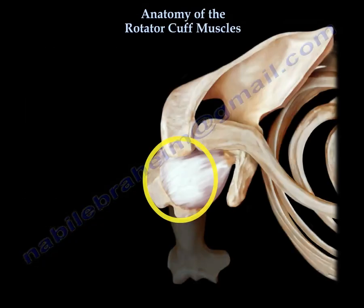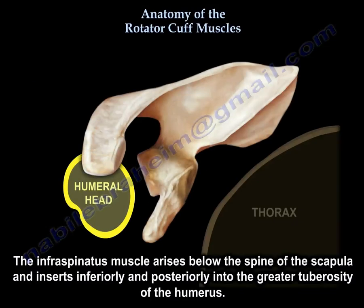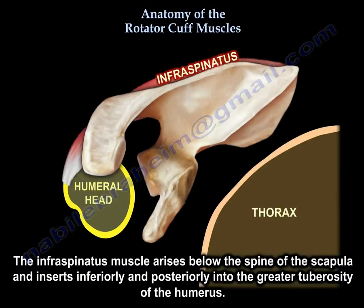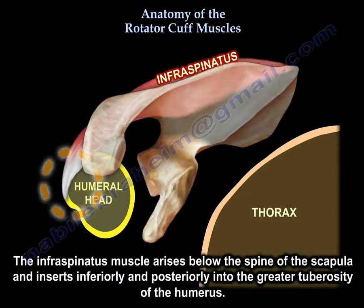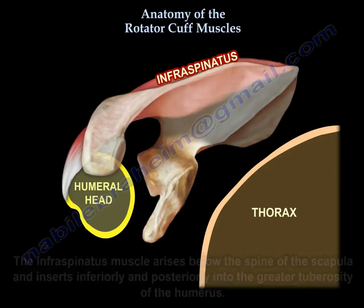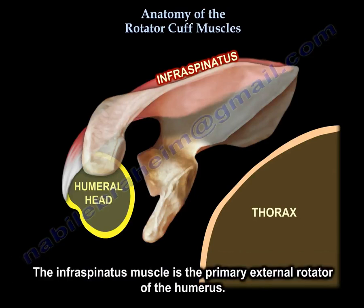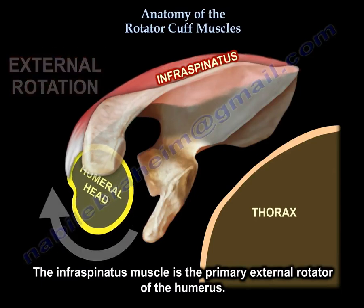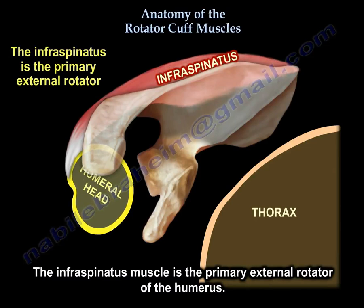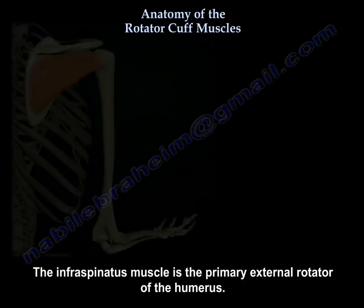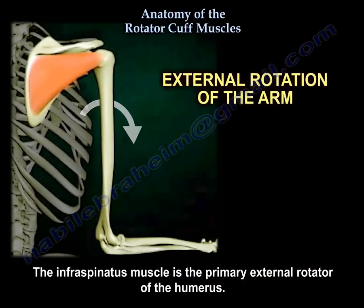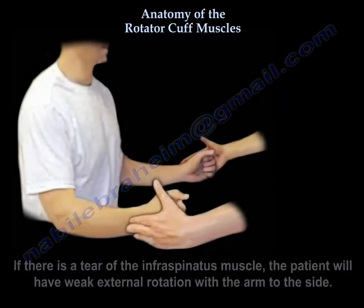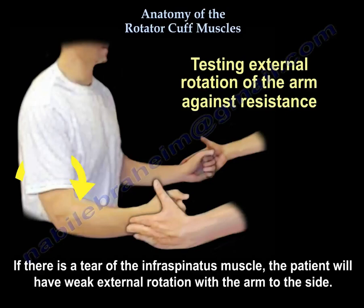The infraspinatus muscle arises below the spine of the scapula and inserts inferiorly and posteriorly on the greater tuberosity of the humerus. Looking at the model, its function is as the primary external rotator of the humerus. If this muscle is torn, you will get weak external rotation with the arm at the side.